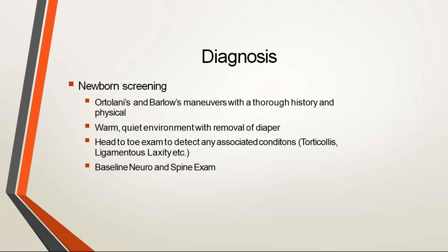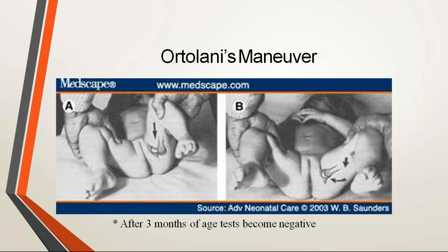To diagnose DDH in a neonate, there is a general protocol to screen every newborn baby. The commonly done tests are the Ortolani and Barlow maneuvers. For the Ortolani maneuver: keep the baby supine on a couch. The first position shows an already dislocated hip; in the second position you are relocating it. Hold the baby over the thigh near the knee and apply downward pressure, then abduct so the hip relocates. You will hear a clicking sound if the femoral head is relocated — this is a positive Ortolani maneuver.